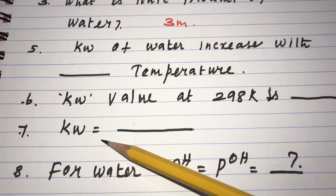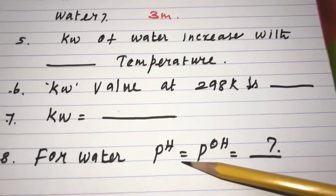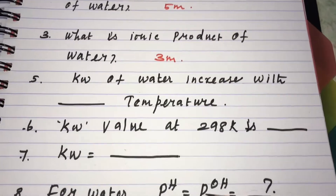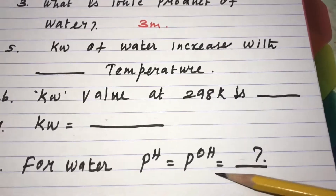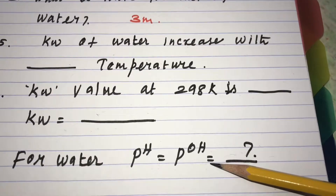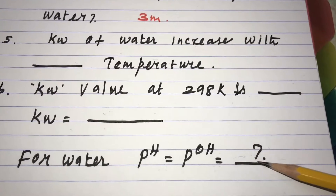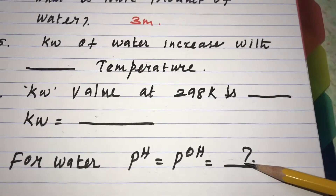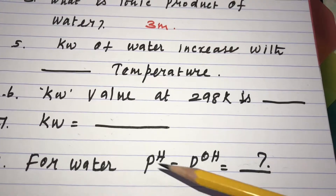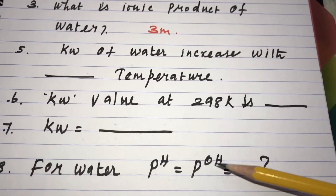For water, pH is equal to pOH, and both [H⁺] and [OH⁻] are equal to 1 × 10⁻⁷ mol L⁻¹. Thank you.